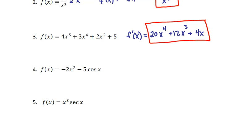The next question is f of x is negative 2x squared minus 5 cosine of x. And we're trying to find the derivative of that. So f prime of x is negative 4x, and then we have negative 5 cosine x. The derivative of that is going to be negative 5 times negative sine x. And simplifying that a bit, we're going to get negative 4x plus 5 sine x.